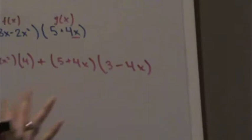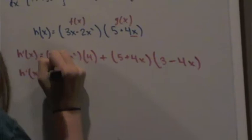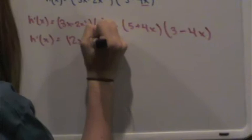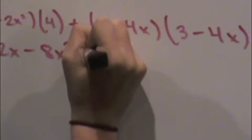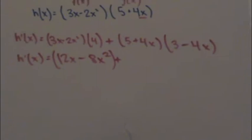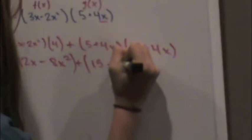So, now you need to simplify. h'(x) is 12x minus 8x squared. And then, you're going to need to FOIL this, and it comes out to be 15 minus 8x minus 16x squared.